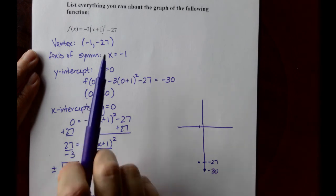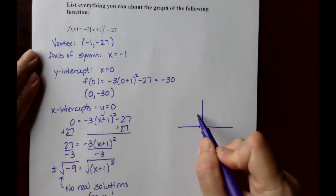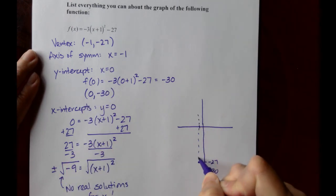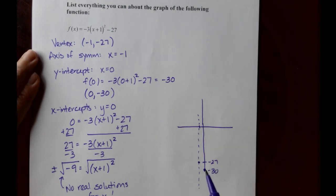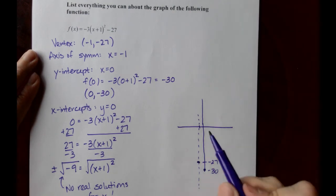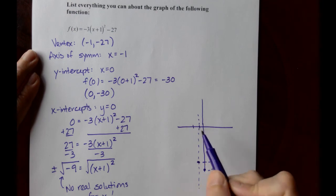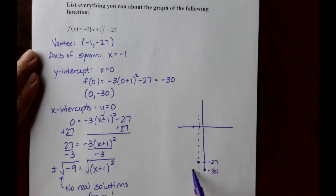We had an axis of symmetry of x equals negative 1. And if that's the case, we're going to have another point over here at negative 2, negative 30.